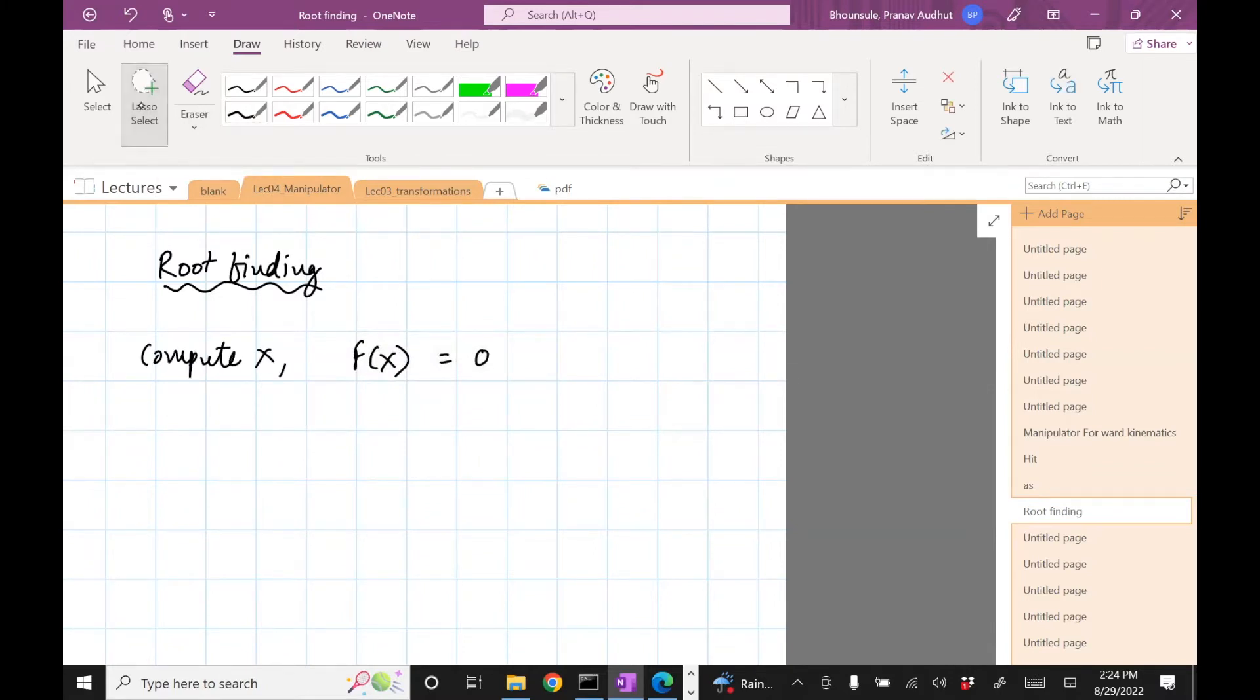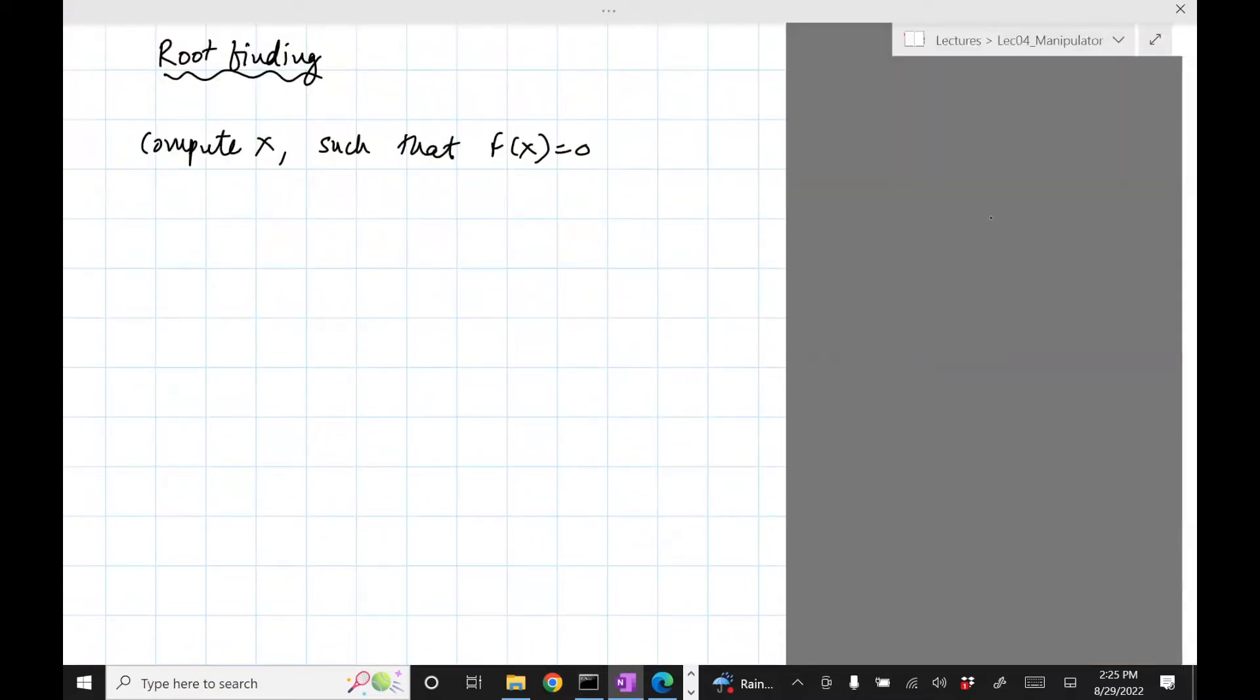Compute x such that f(x) equals zero. If f(x) is a simple quadratic equation like x² - x - 2 = 0, then how do you solve it? Well, for a simple equation like that you can guess that x equals minus one would be one solution and maybe two is a solution.